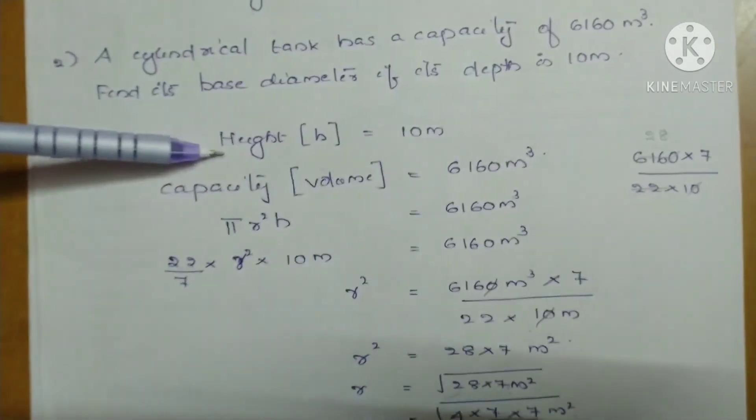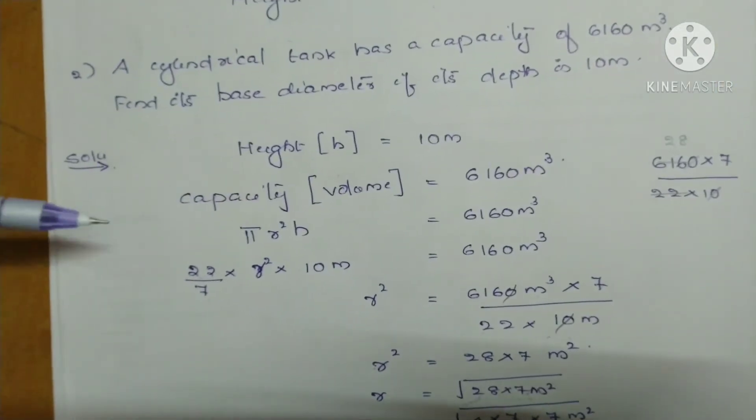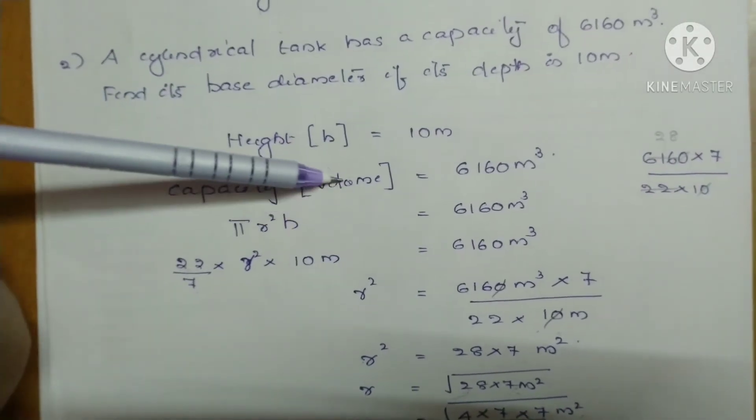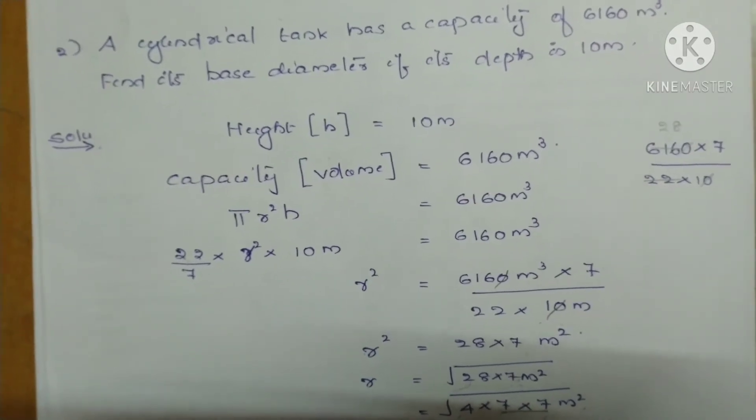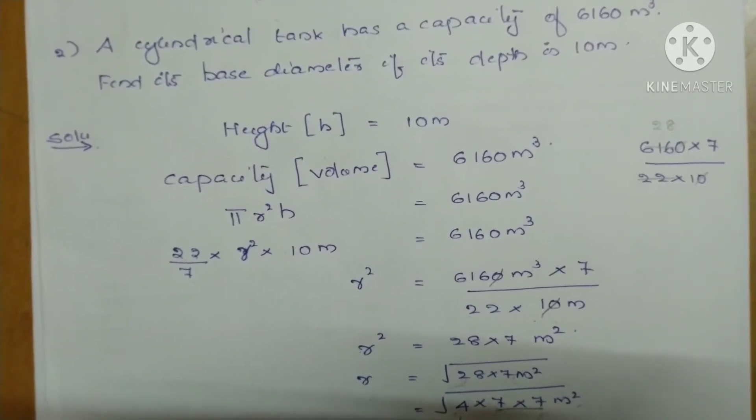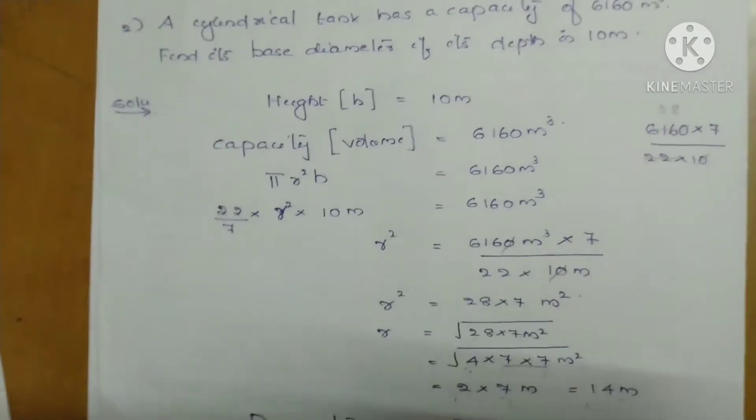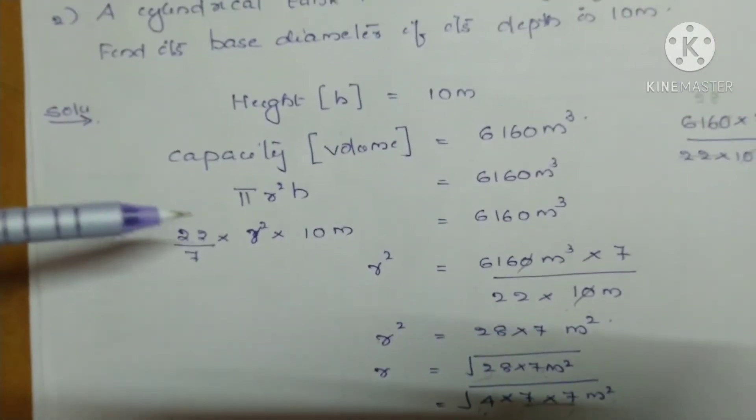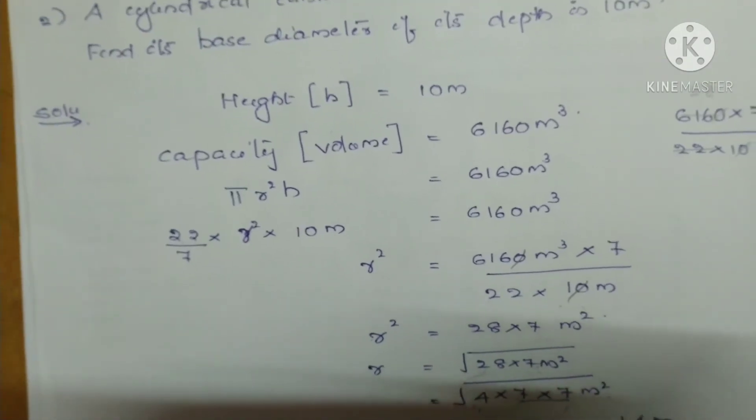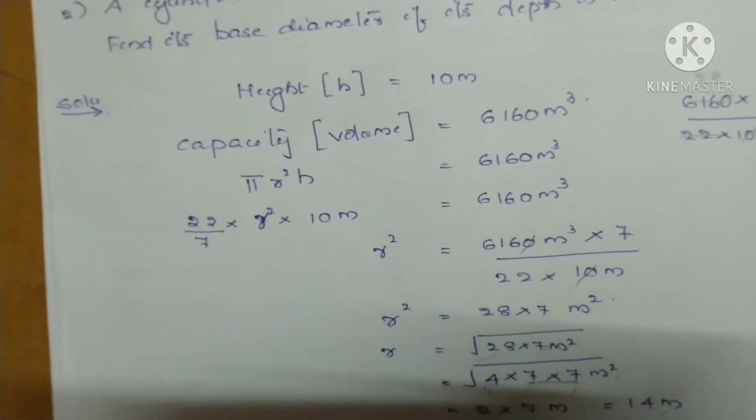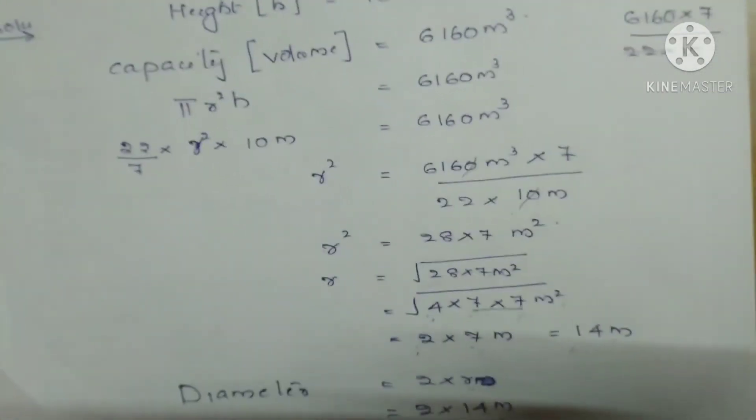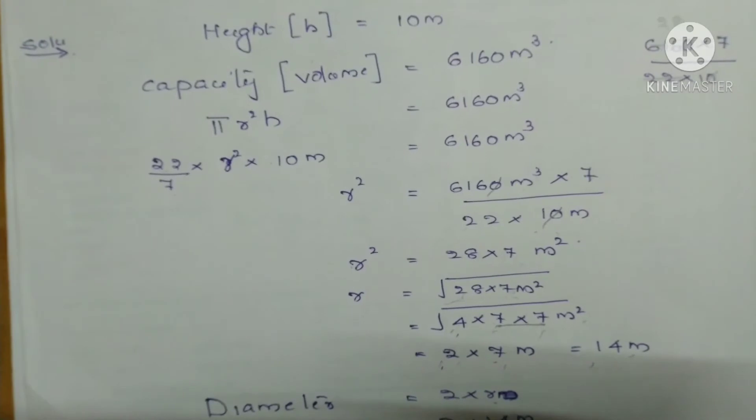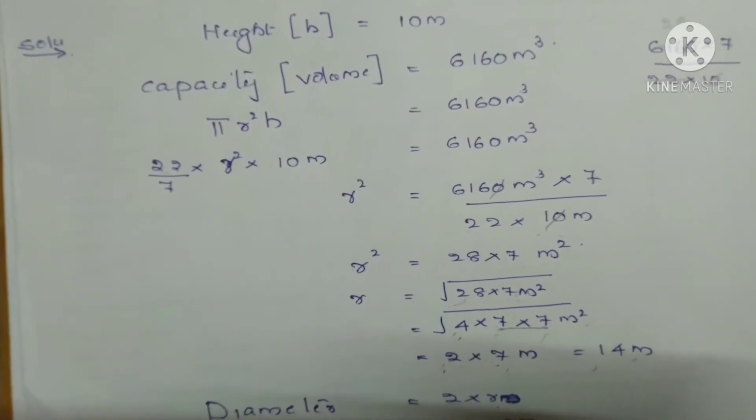So here height is given 10 m. Capacity, depth means height. Capacity means volume, that is given 6160 m³. Then here also volume is given, so we can write down the formula. What is the formula? πR²H. πR²H is equal to 6160 m³. Then you substitute the value. R is not given, so that will remain same. H is given 10 m, that we can substitute.